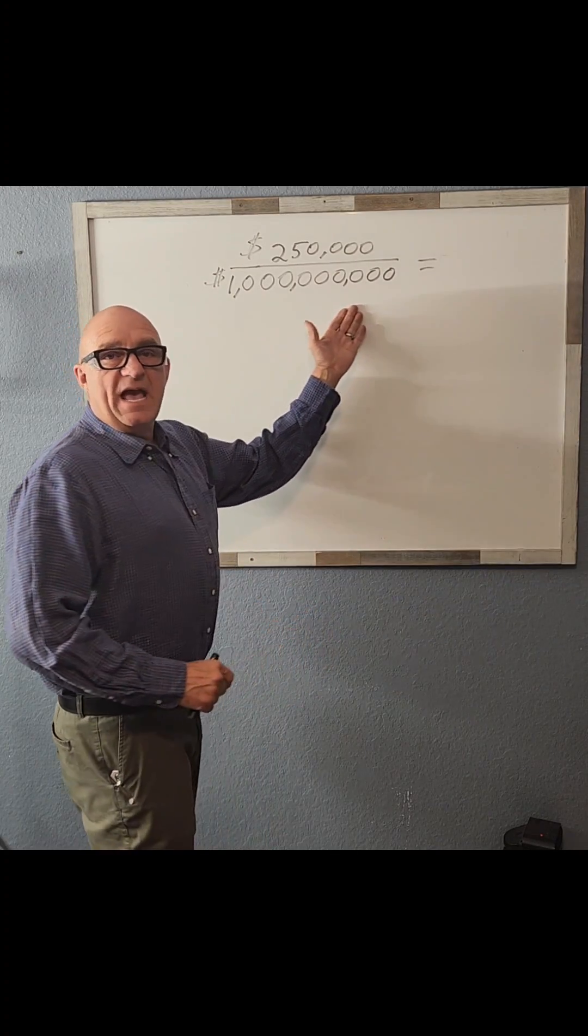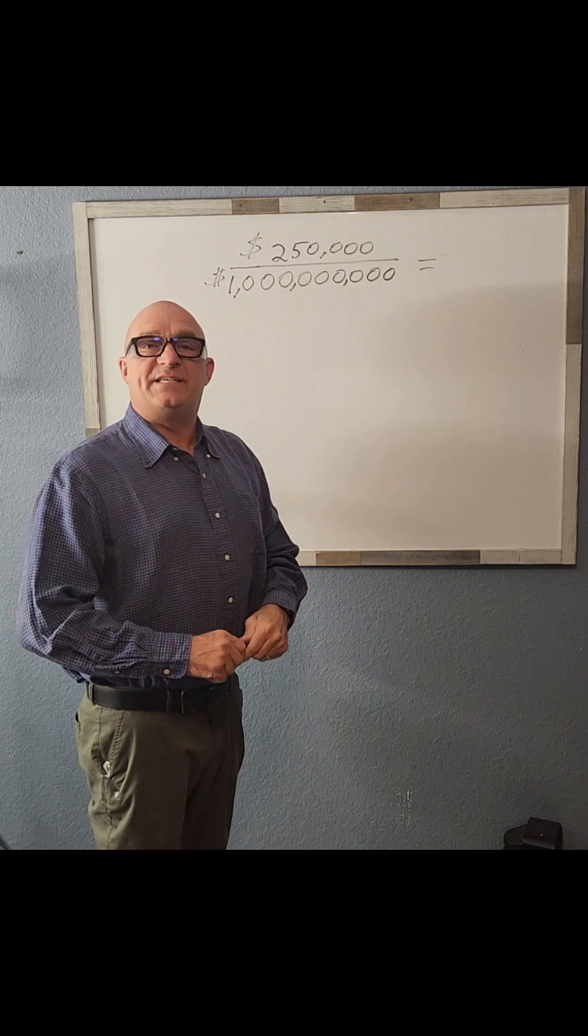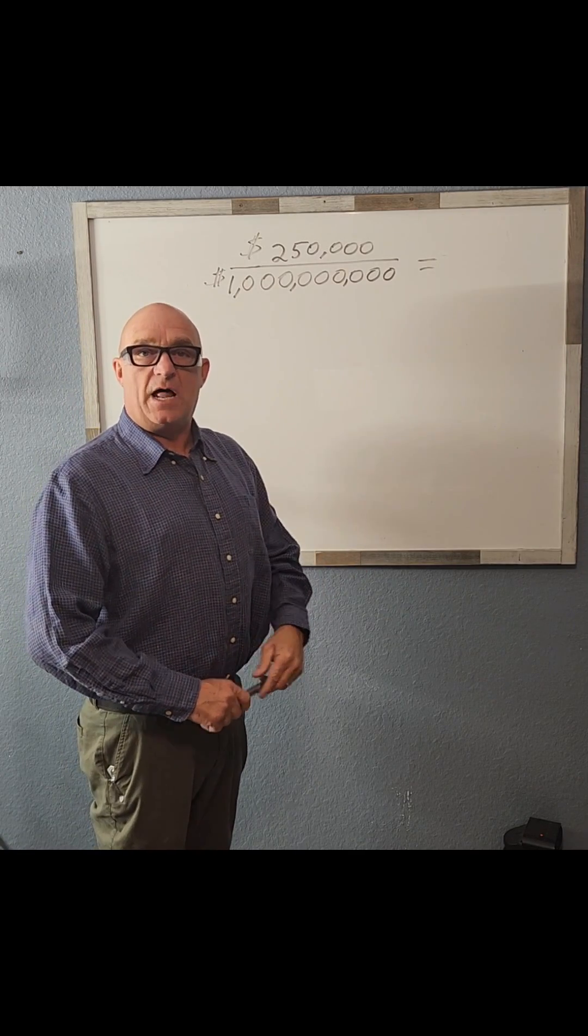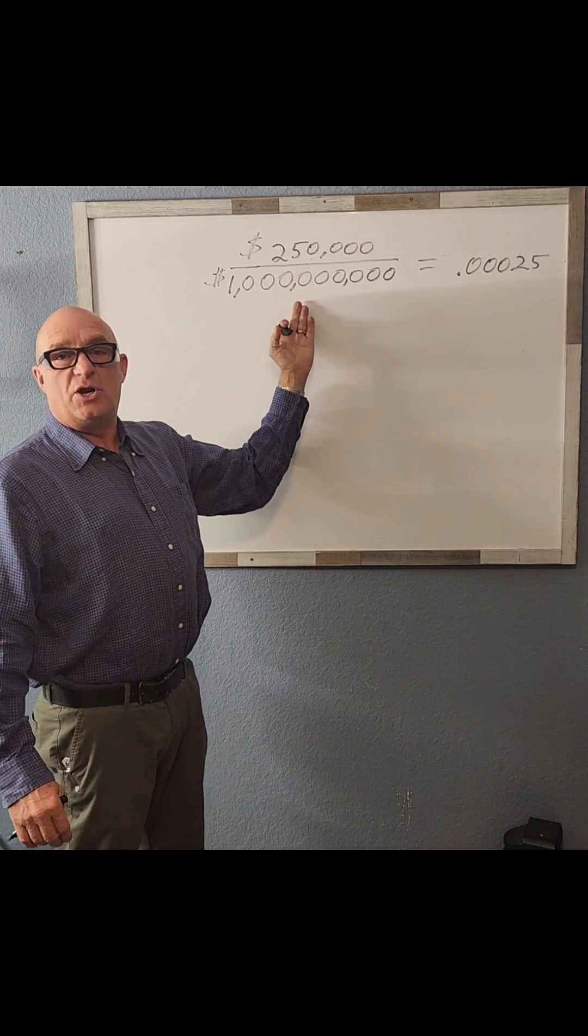Let's say somebody has $1 billion to spend, okay? And they decide to spend $250,000. This is the decimal equivalent of $250,000 over $1 billion.